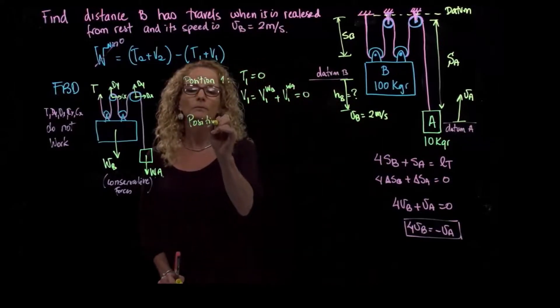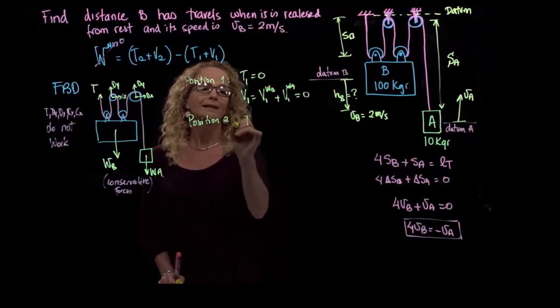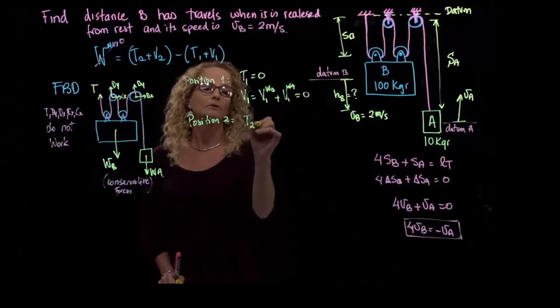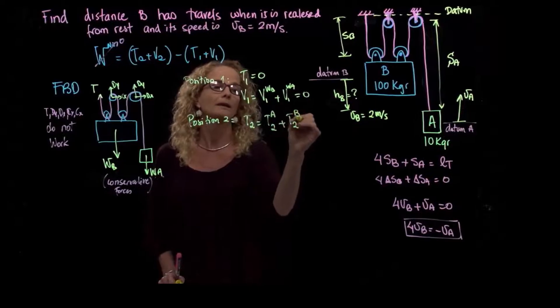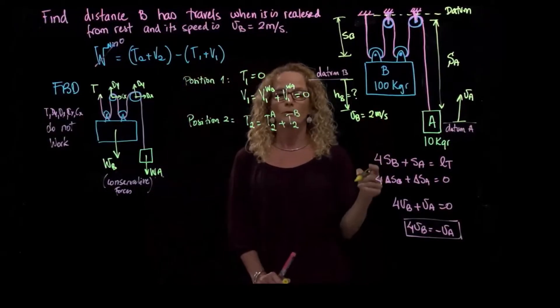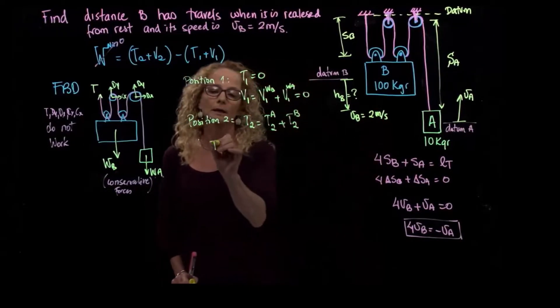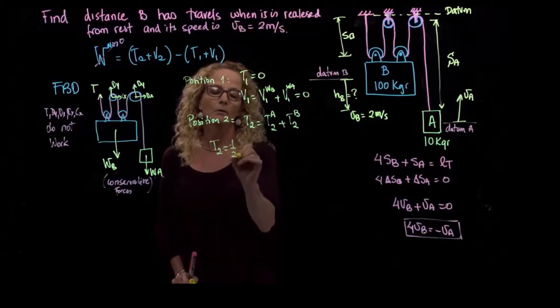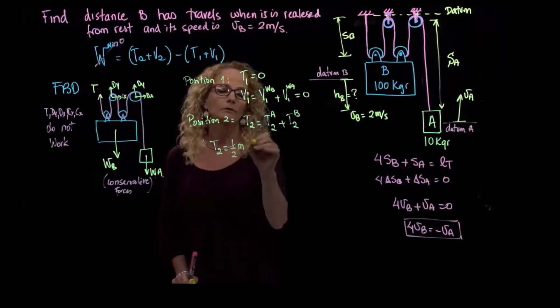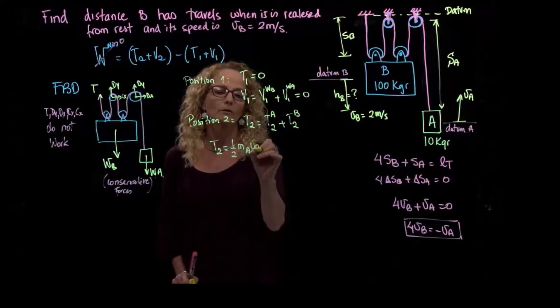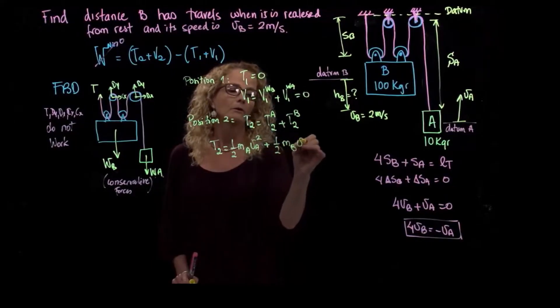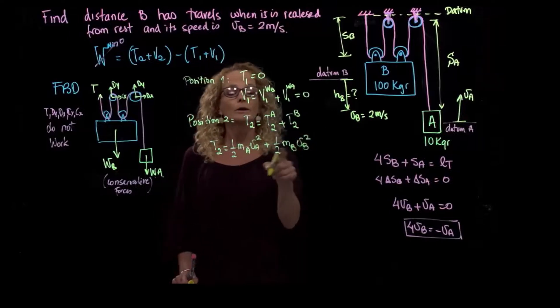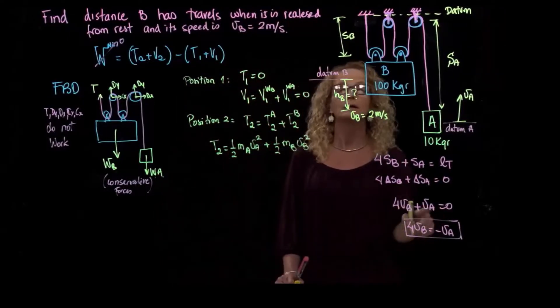So my potential energy, which is the potential energy of the weight B and the potential energy of the weight A, both are equal to zero because I put the datums in the first position. For position two, kinetic energy will be equal to the kinetic energy of block A plus kinetic energy of block B, because both are moving.